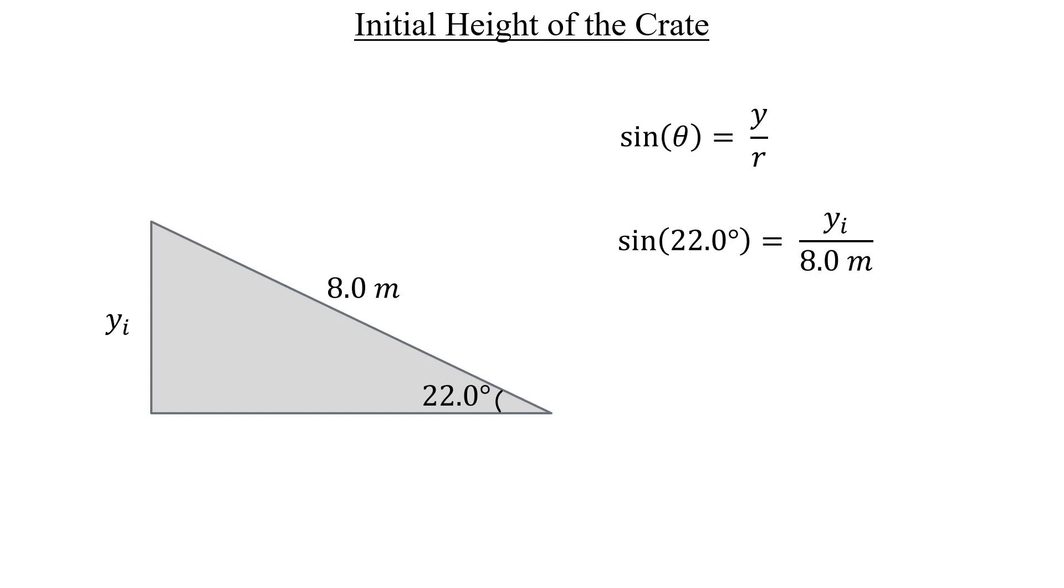If we multiply both sides by 8 meters in order to get rid of this denominator on the right, then we get the initial height in terms of quantities we already know. So that part's good.